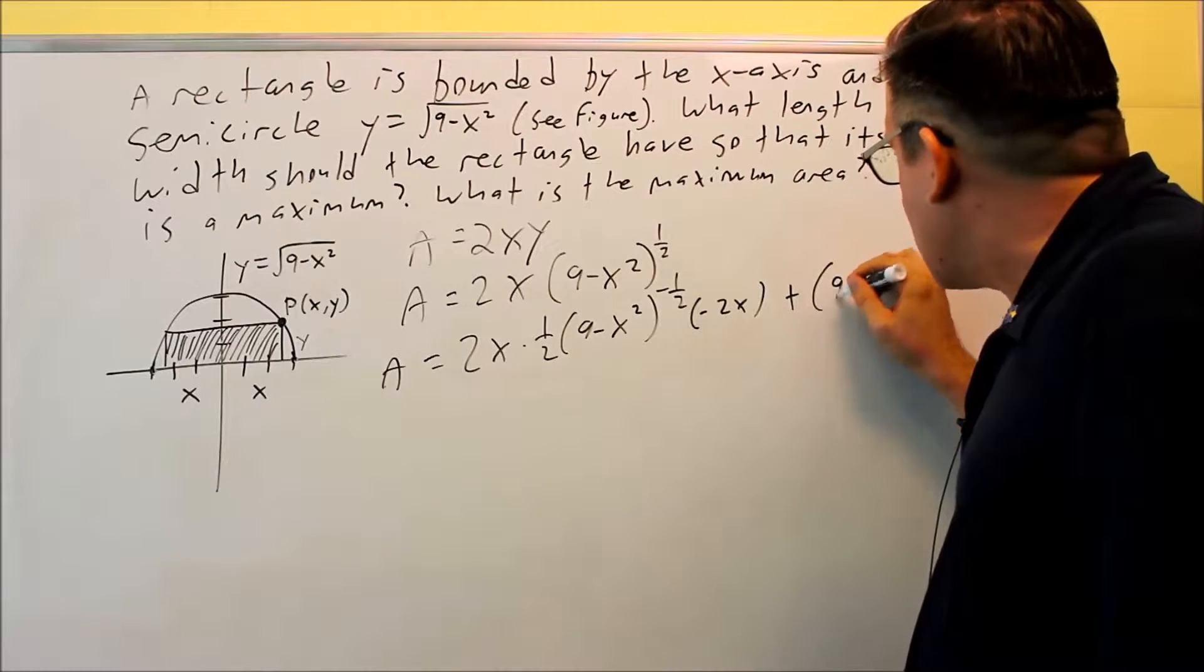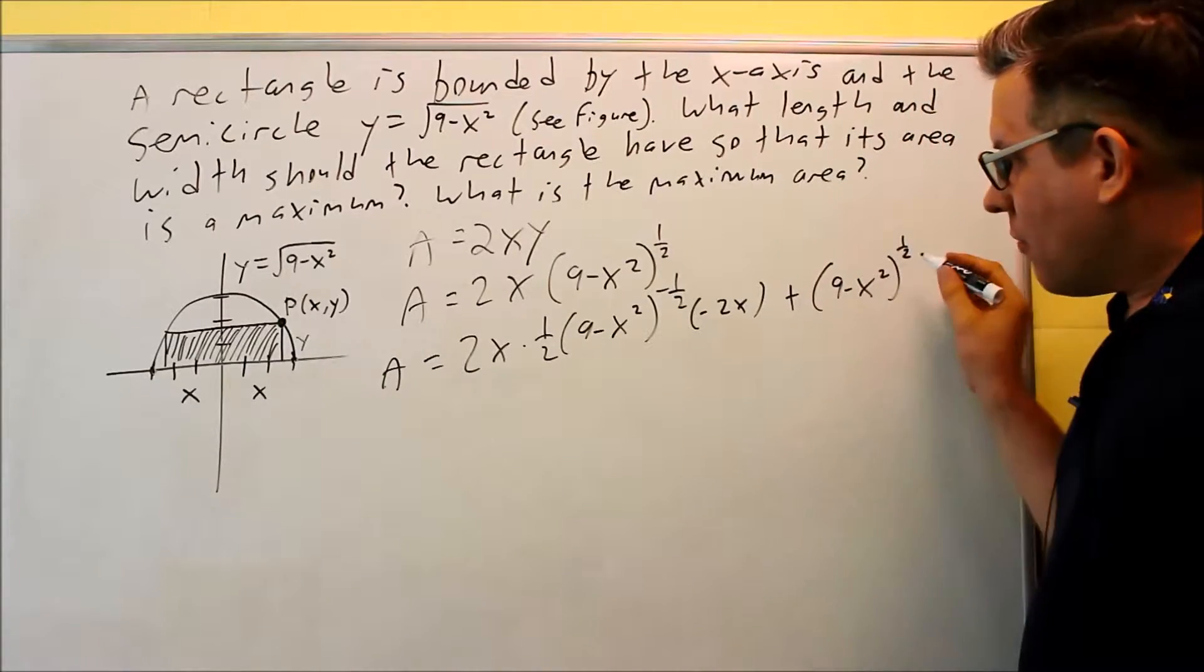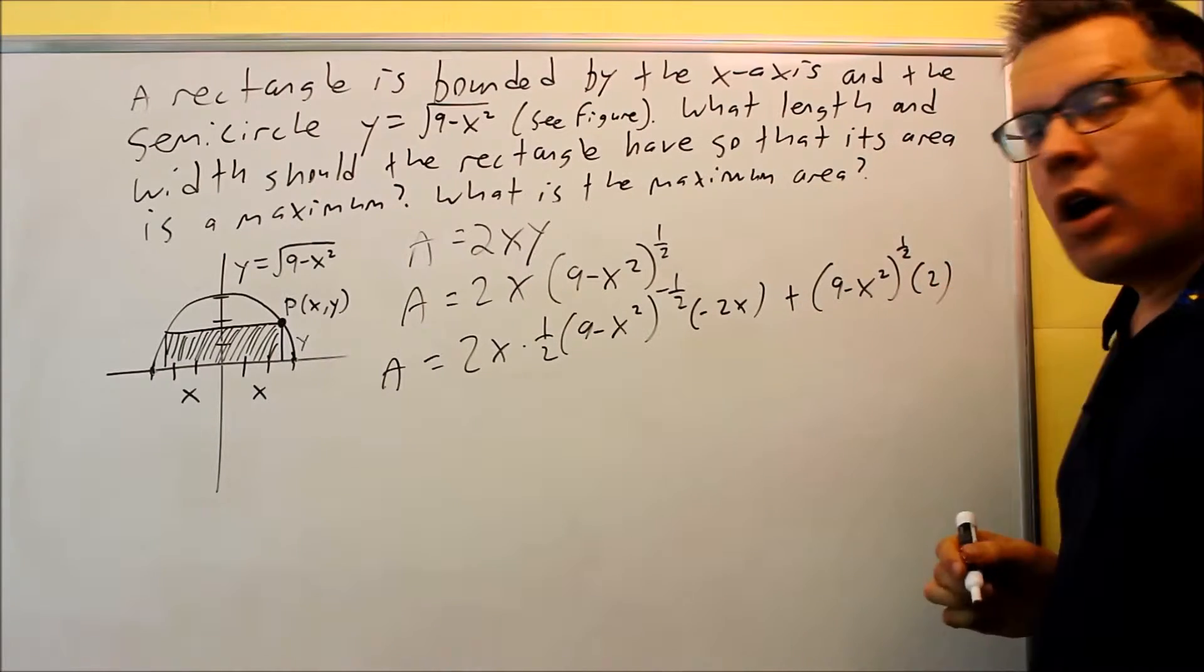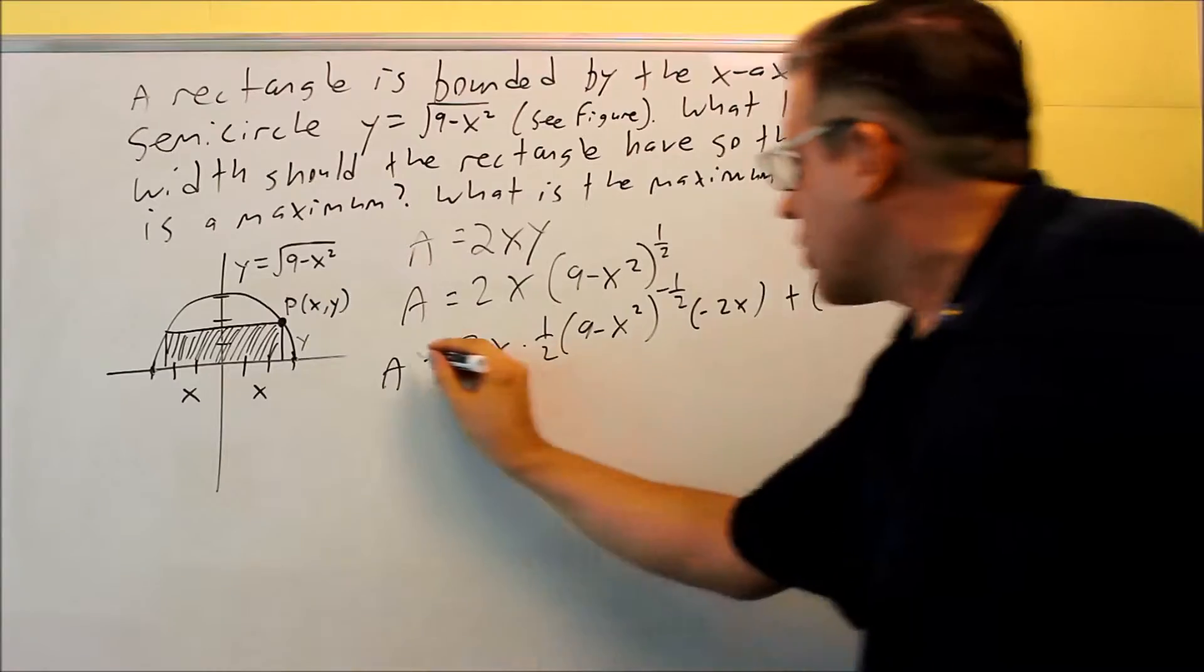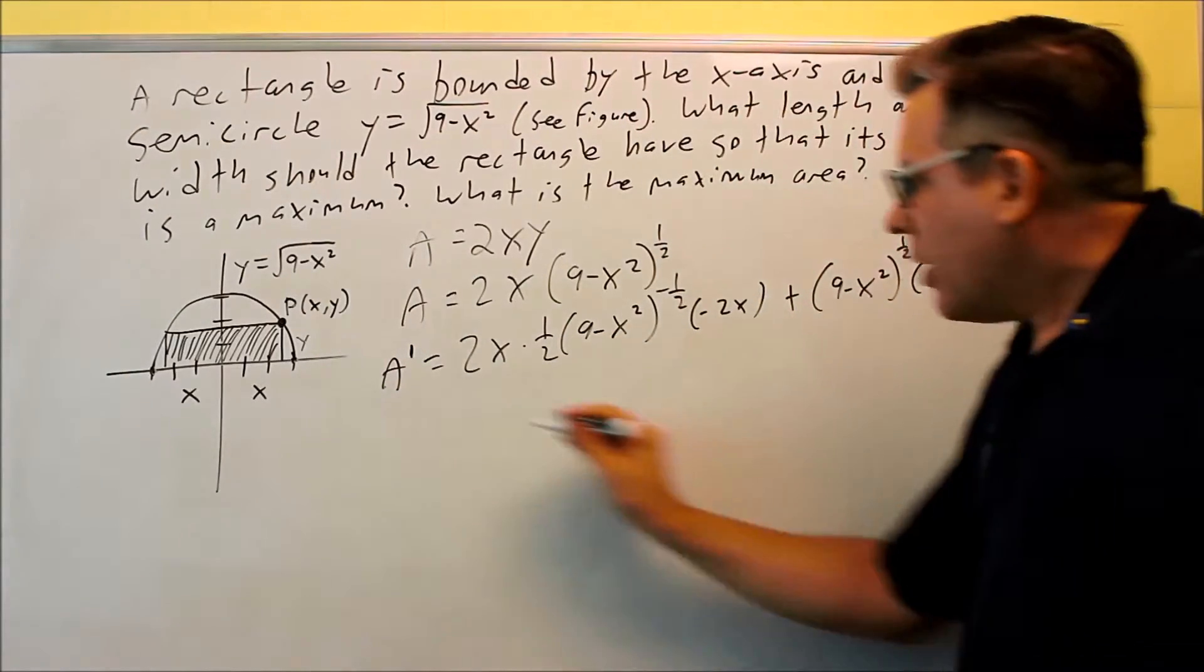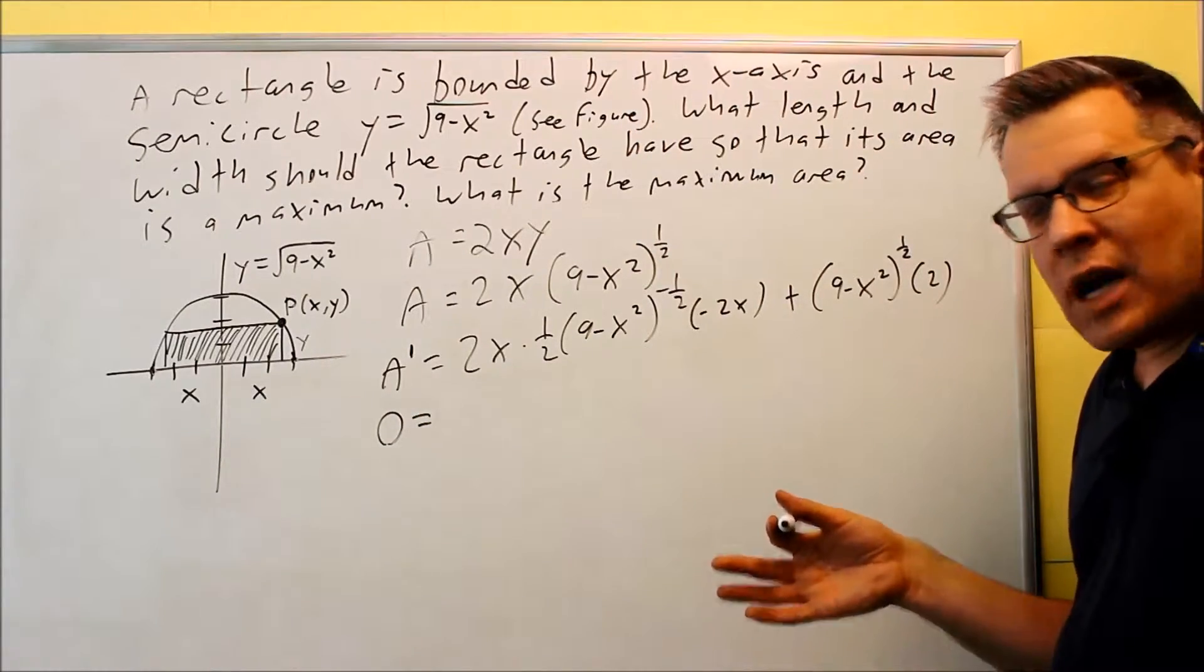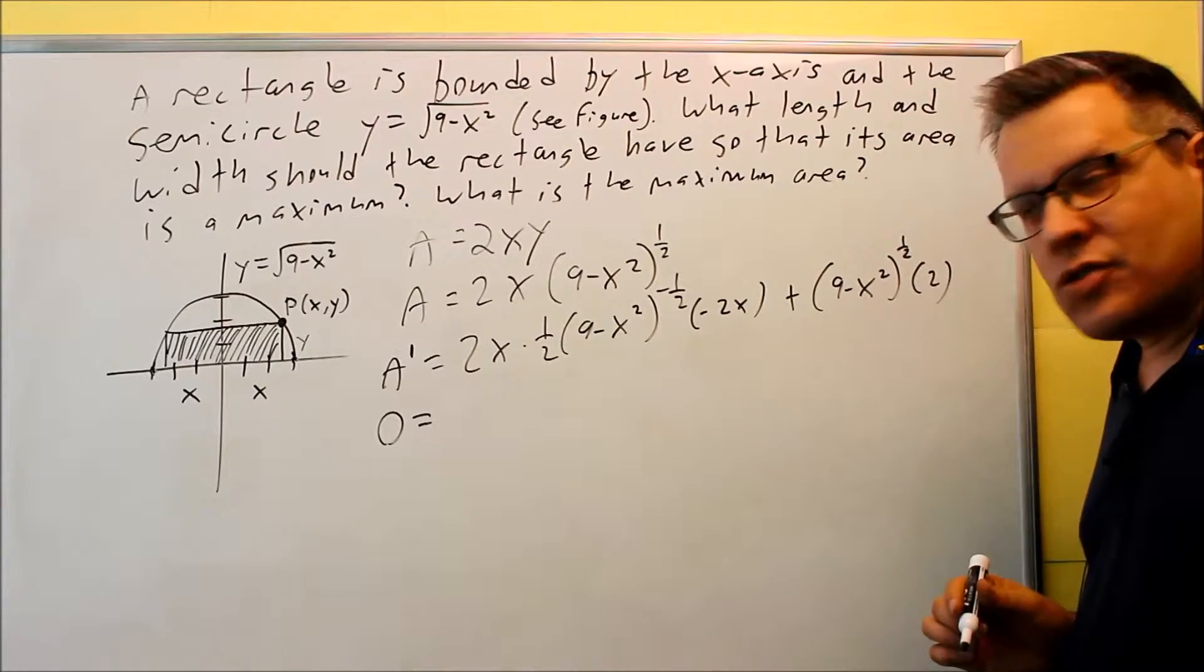Plus the second piece, 9 minus x squared to the 1 half, and then times the derivative of the first, which is going to be just 2. We have all this, that's our derivative, so I should be marking that, that's a prime, there it should be. And we're going to put a 0 in for that, because that's always what you do with these optimization problems. So you have to take the derivative, and then set it equal to 0.